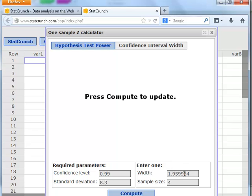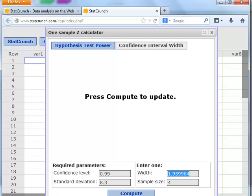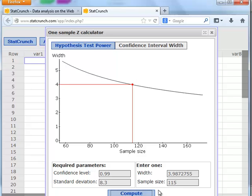And the width of the interval this time, the margin of error was 2. So the width would be 2 times that margin of error, or 4. So let's go ahead and enter that. Leave the sample size blank and click compute, and we get a sample size of 115.